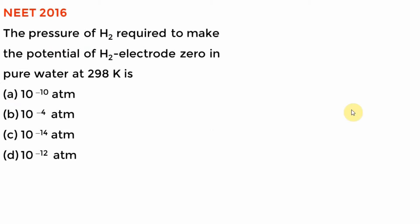In 2016 this question appeared: the pressure of hydrogen required to make the potential of a hydrogen electrode zero in pure water is... Now you have to be very clear. The hydrogen electrode potential is zero under standard conditions. So when you look at your Nernst equation, E° cell is zero. They are asking you how to make E_cell zero — so understanding the question is key.